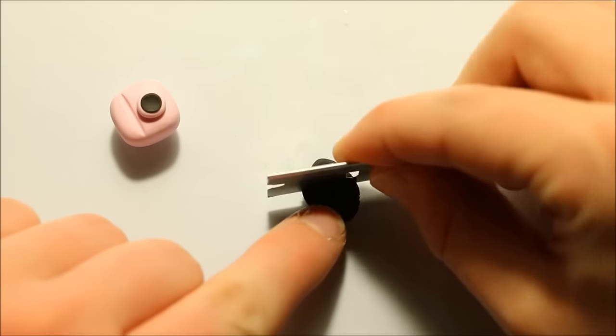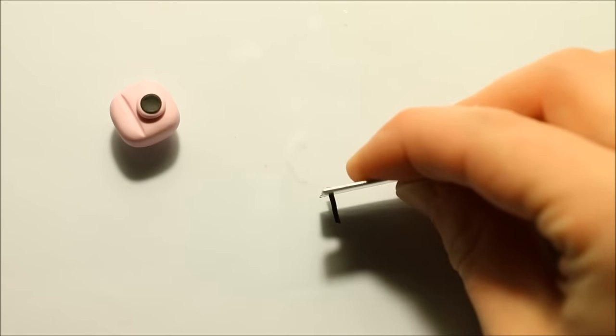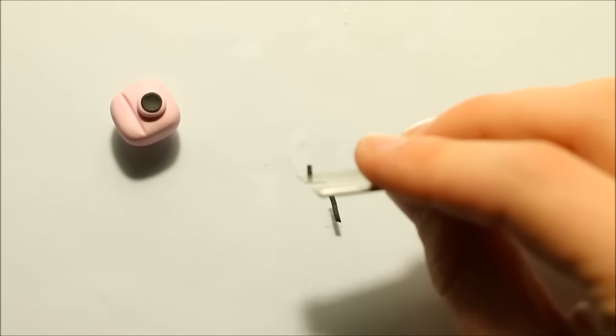To make the little viewfinder piece on the side, flatten out some black clay and cut out a small rectangle using your blade and then attach it in the top left corner.